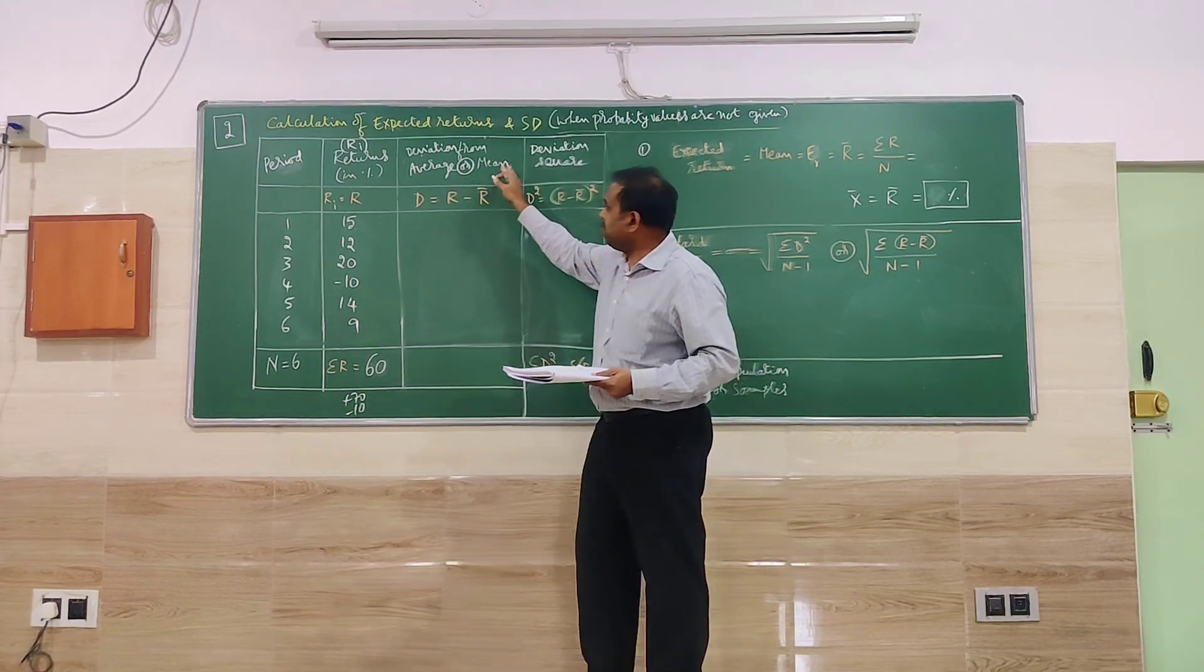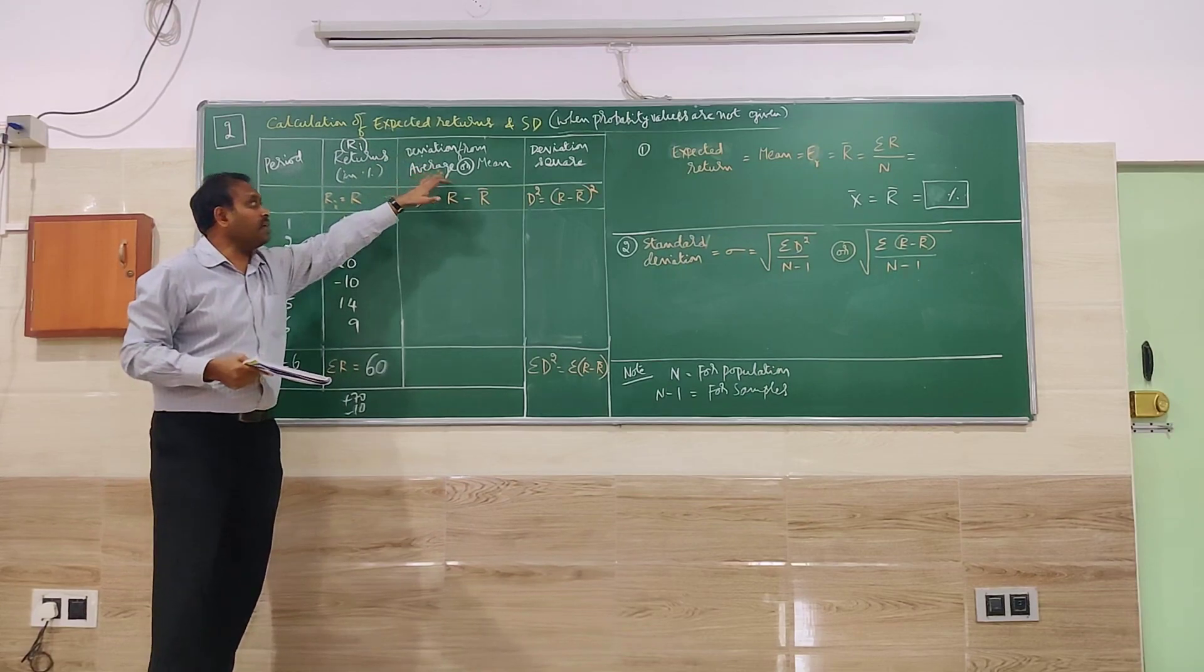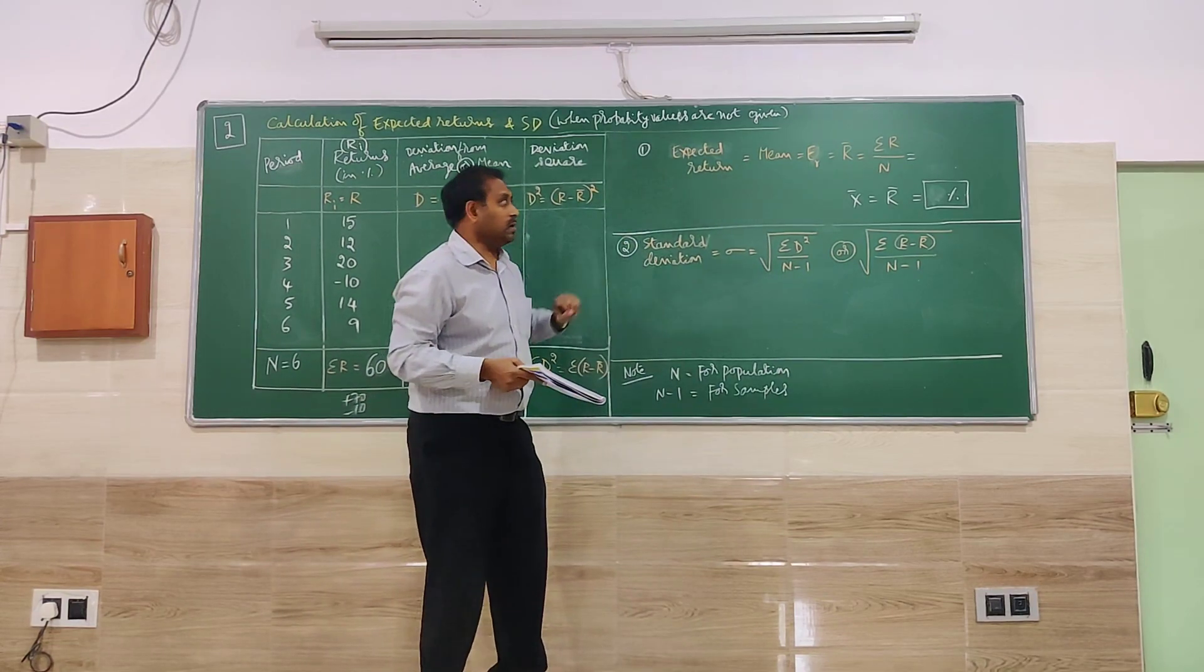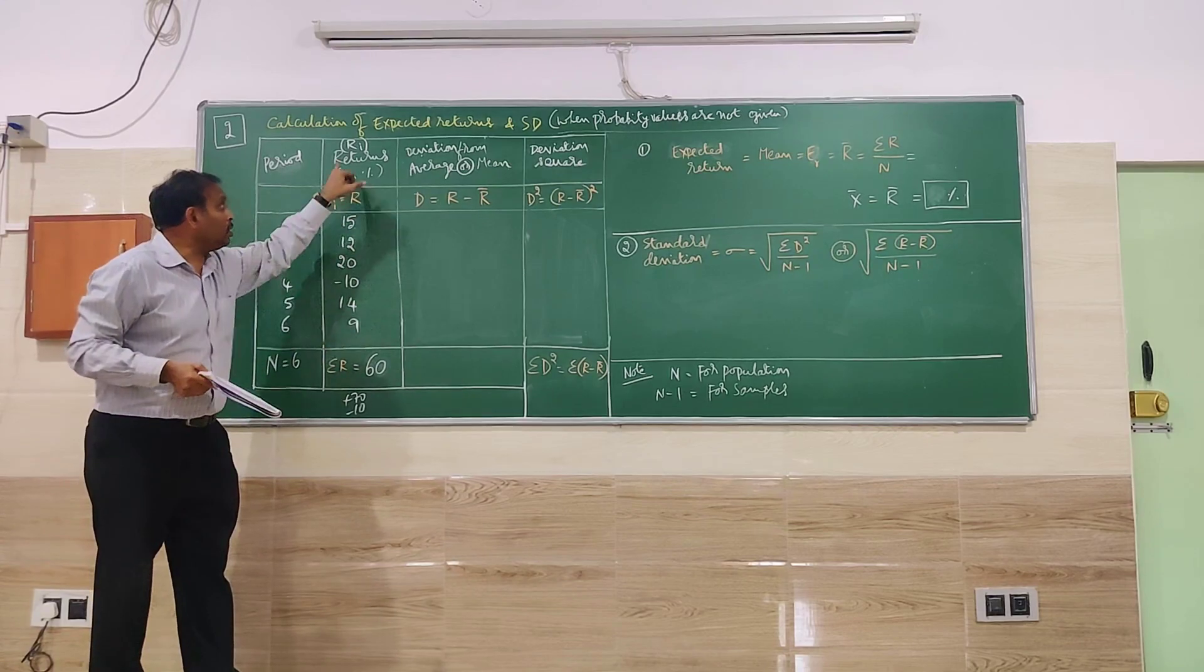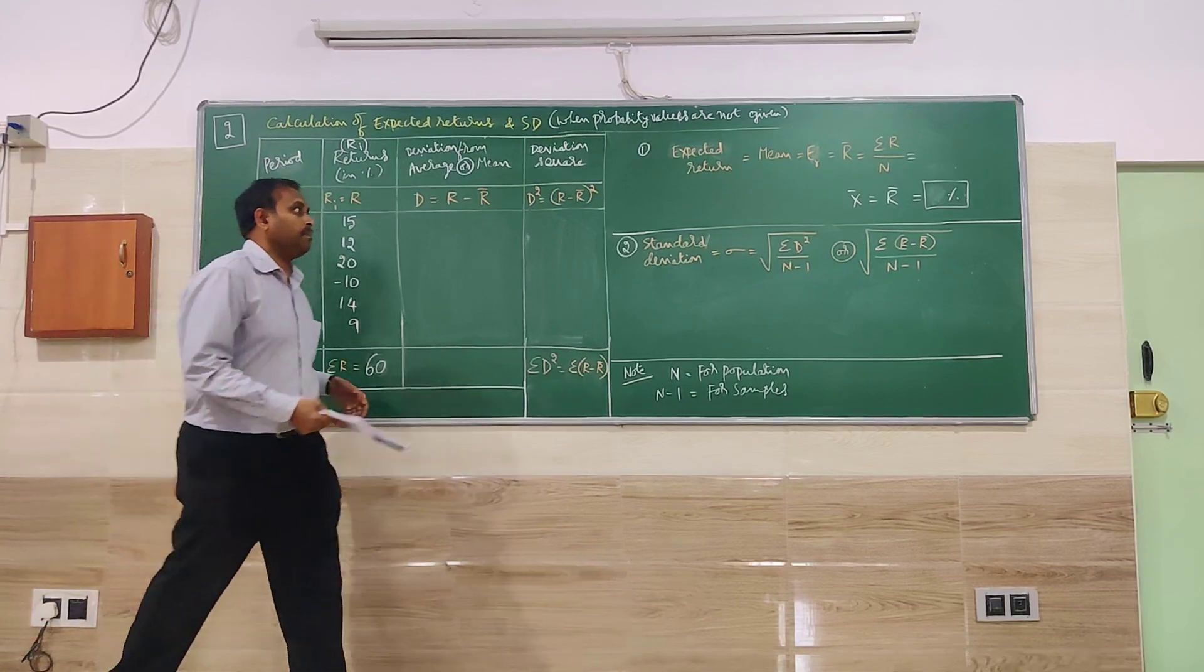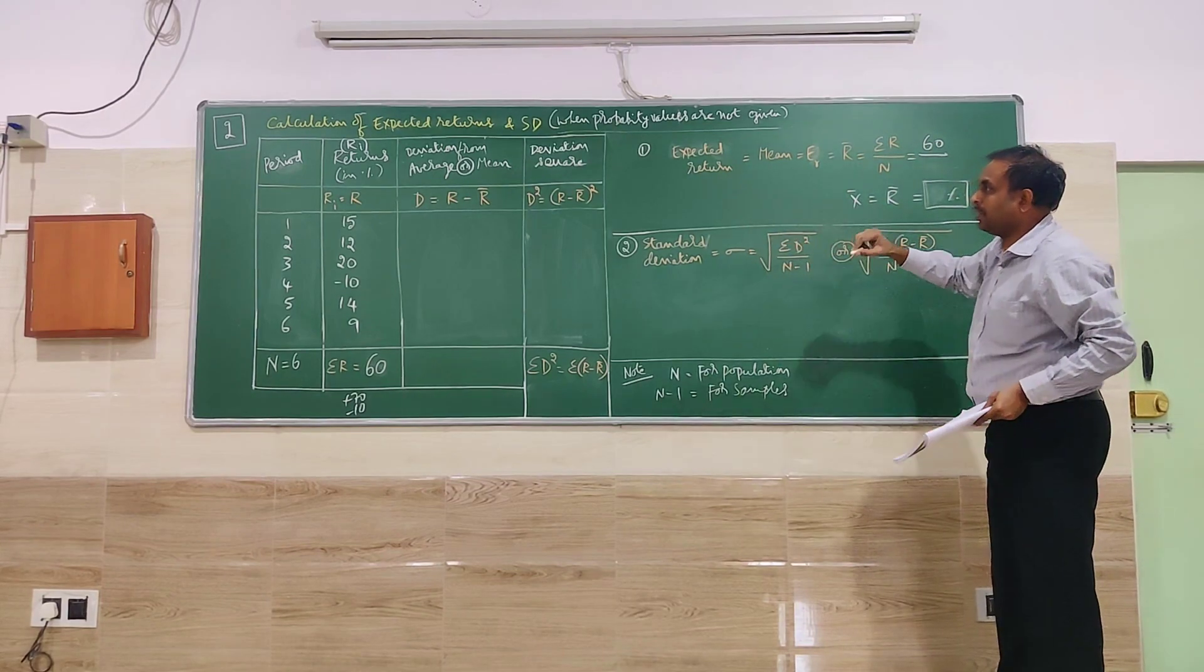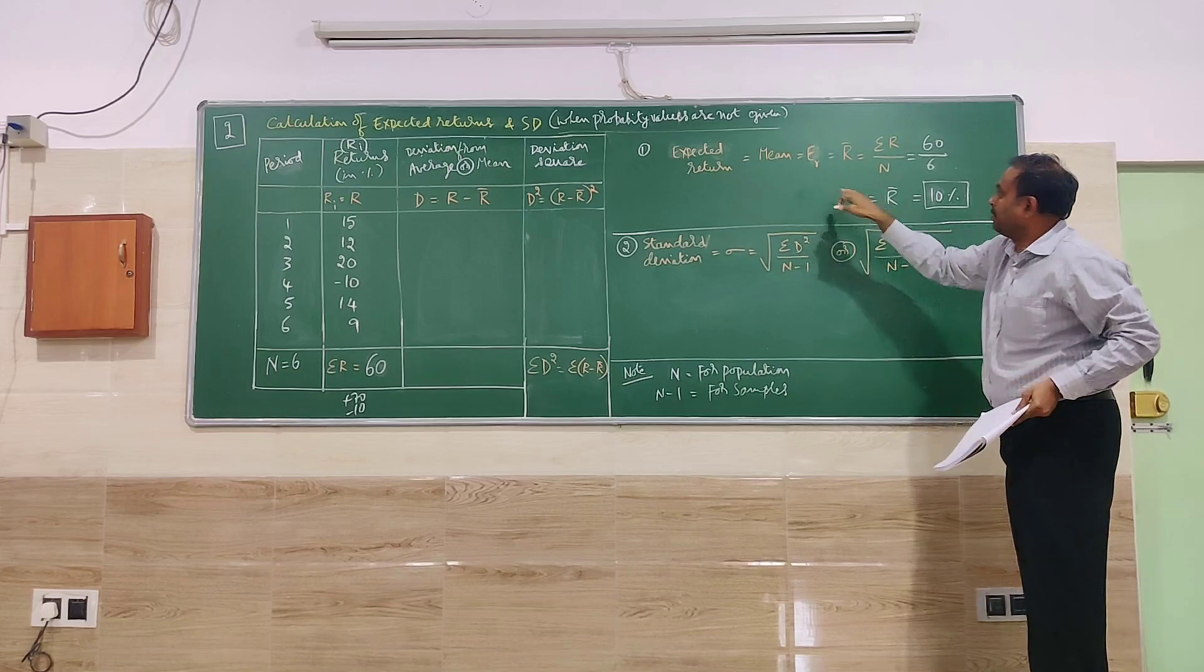This is the first part of it. The next is we have to find the deviation from average or mean. For that, we have to go for calculation of expected returns. For expected returns, we need summation R, that is the total of returns divided by number of years or number of periods. So when we substitute here,